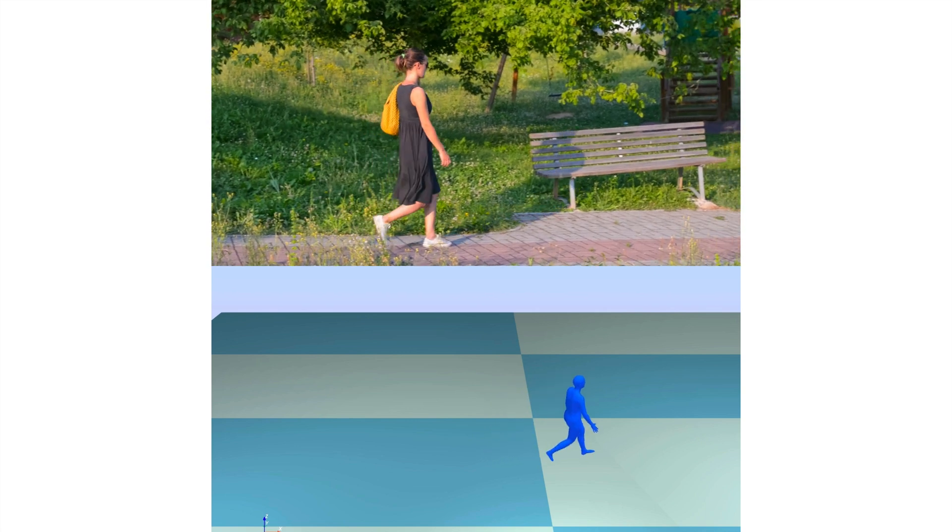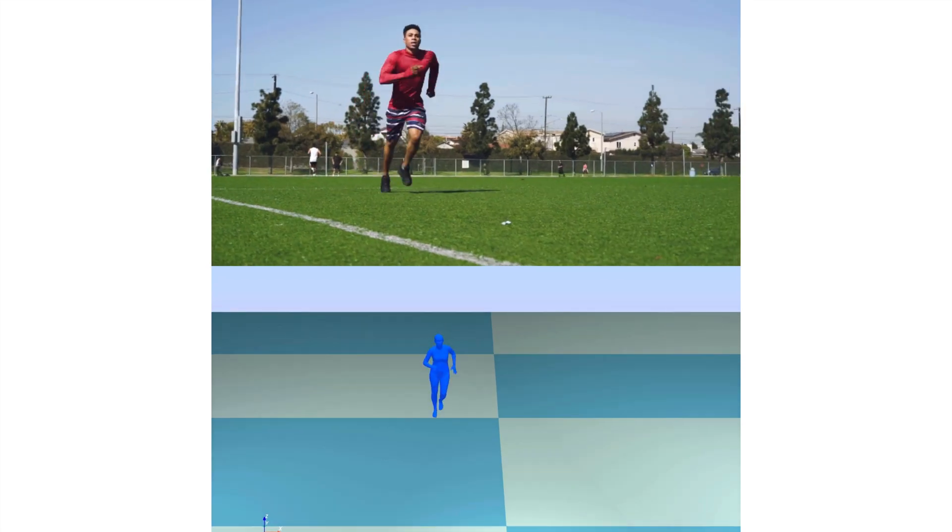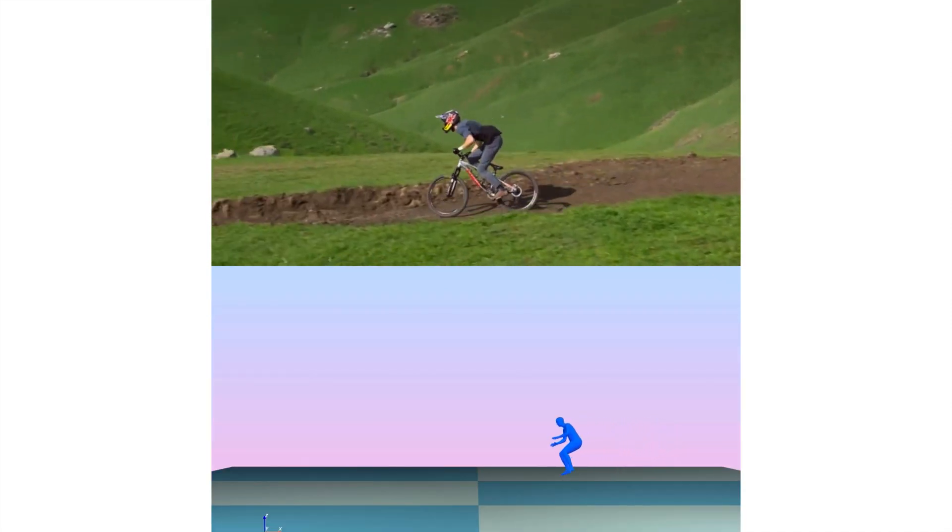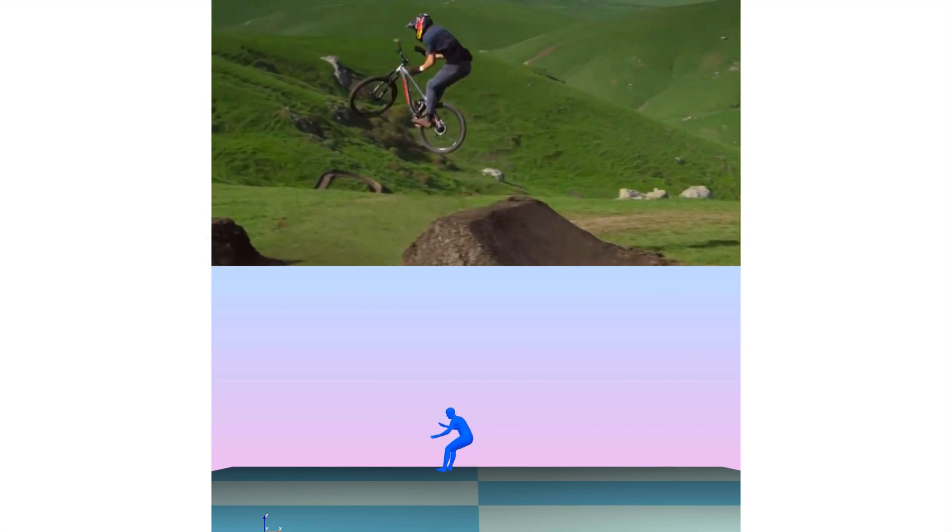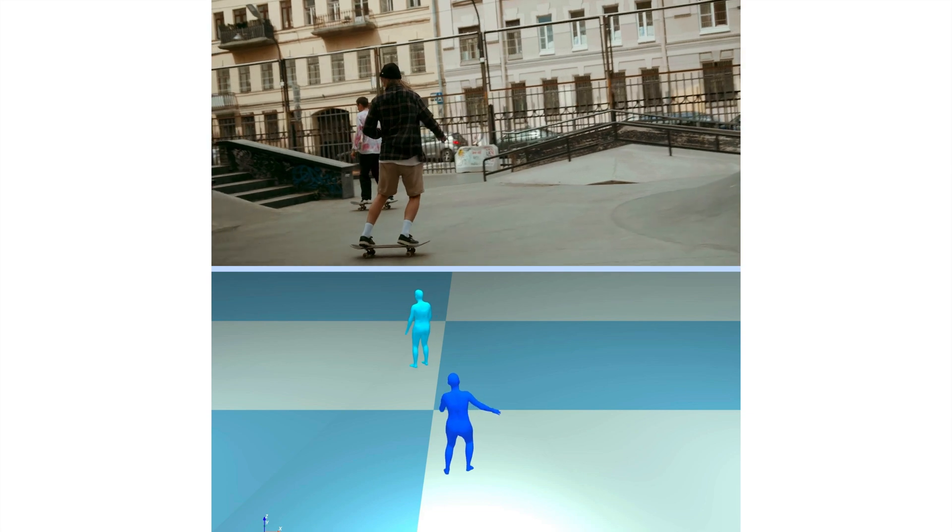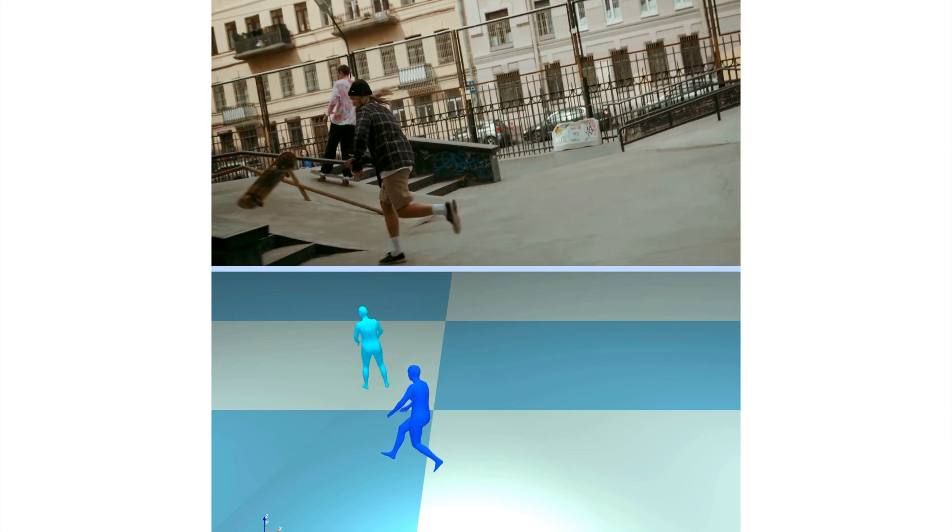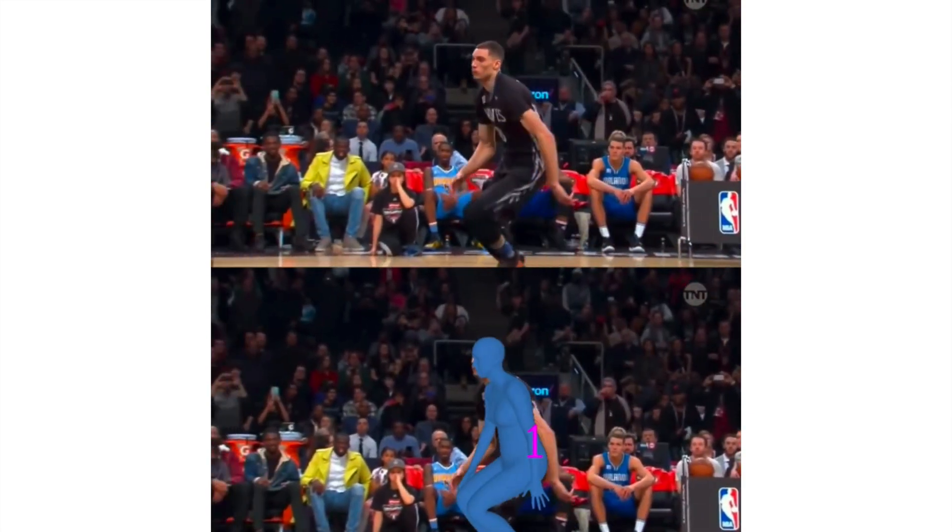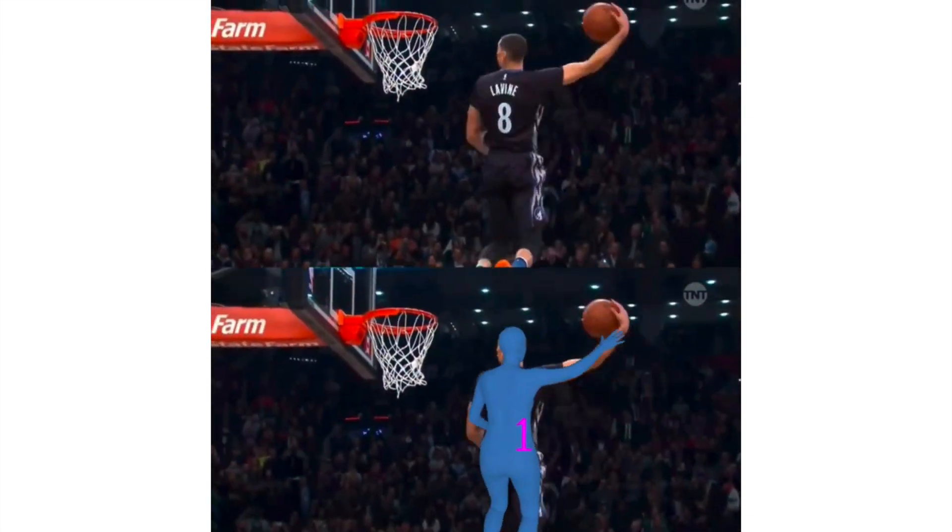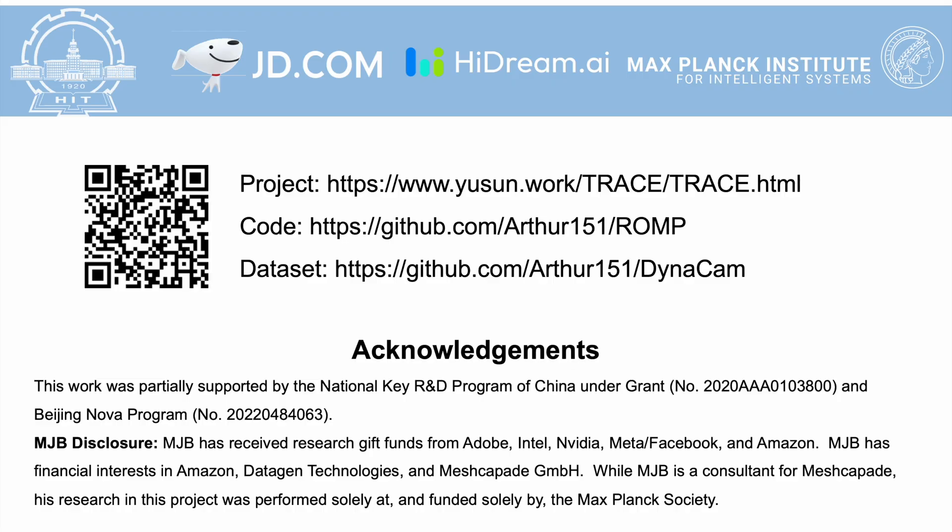We introduce two novel motion offset representations to explicitly model temporal multi-subject association and global human trajectories from temporal cues. This enables our network, TRACE, to be trained in an end-to-end manner. TRACE estimates global human motions and trajectories in global coordinates, achieving state-of-the-art results. Thanks for watching.